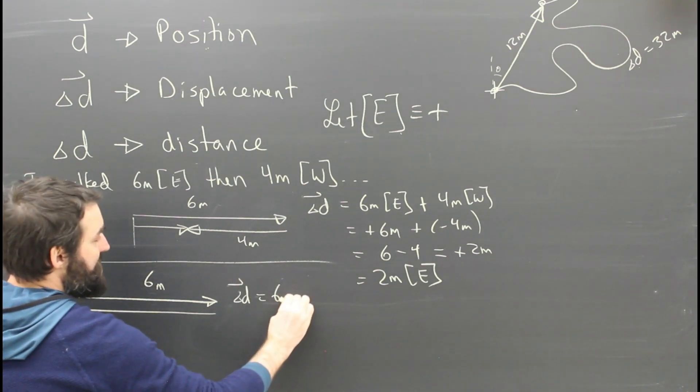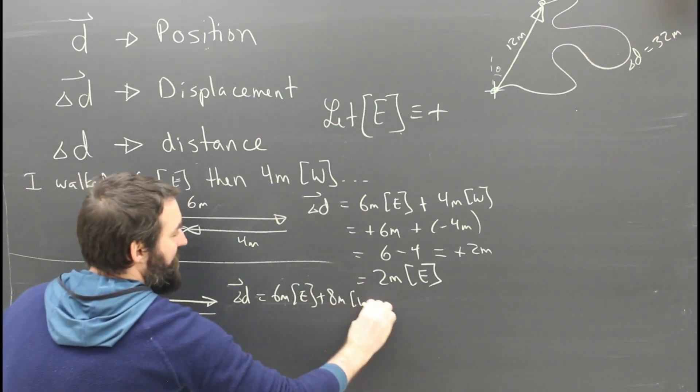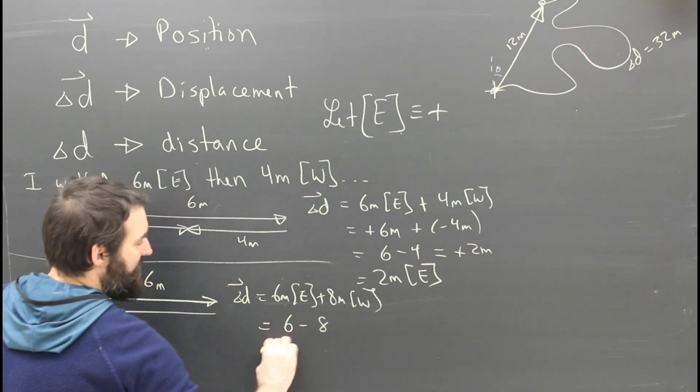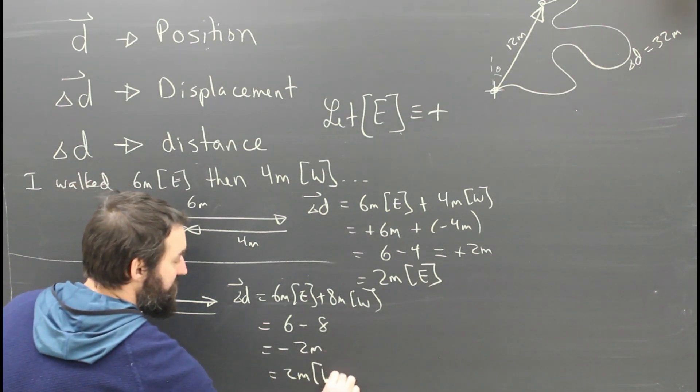Well, my displacement this time would be six meters east plus eight meters west, which is of course six minus eight, which is negative two meters, which is equal to two meters west.